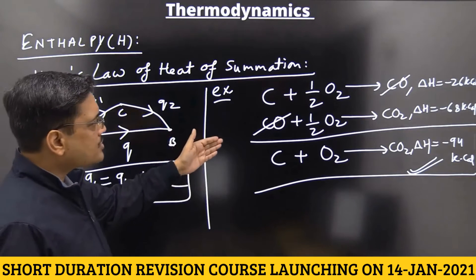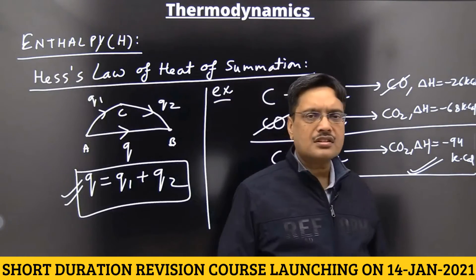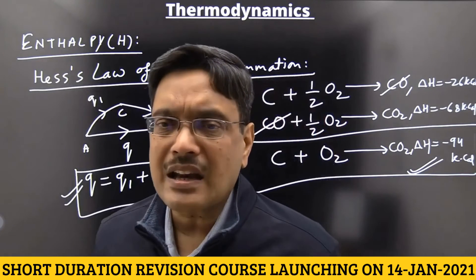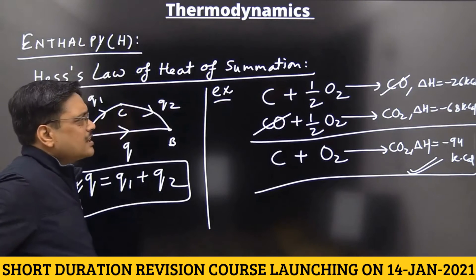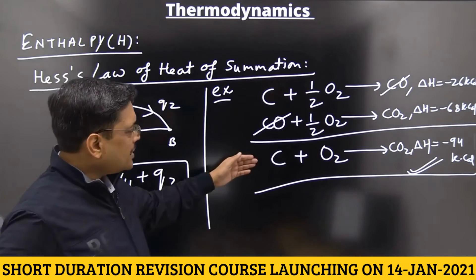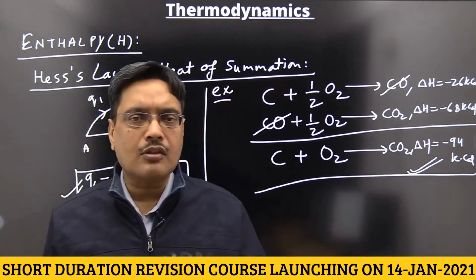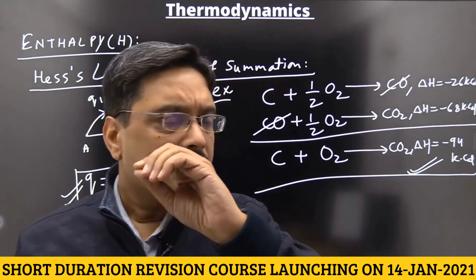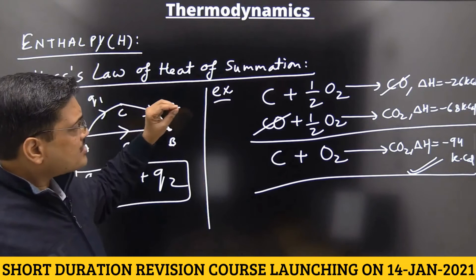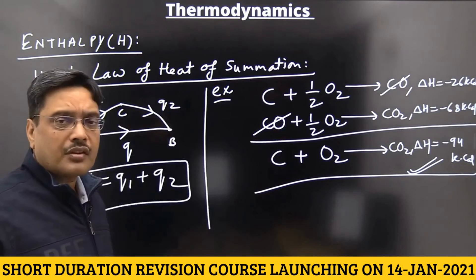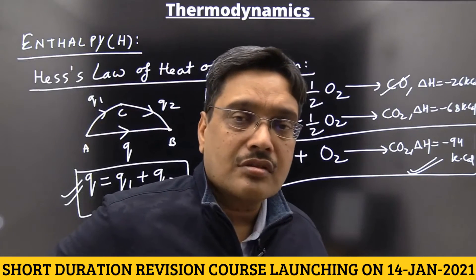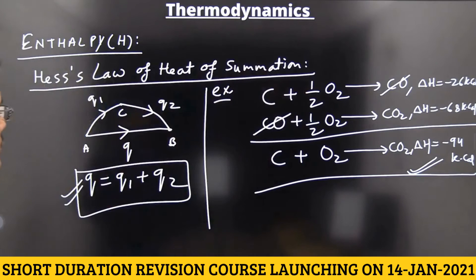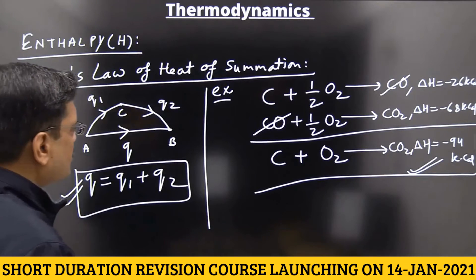In this way we can calculate the value of Delta H of any equation with the help of other equations which are given. It can be multiplied, divided, added, or reversed — anything can be done for obtaining the required equation. That work done on the equation is the same work done on the value of Delta H. This is Hess's Law.